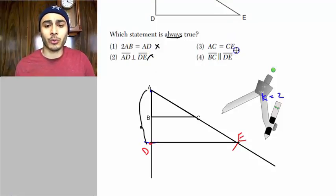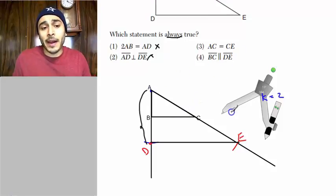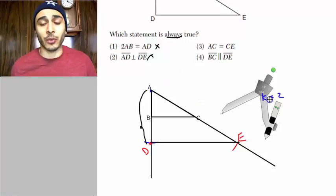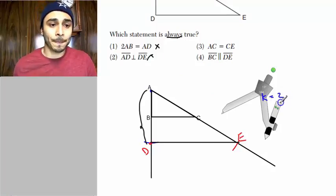AC is equal to CE. Well, in this case it is, again, because we use K equals 2. But if K was not equal to 2, AC would not be equal to CE.